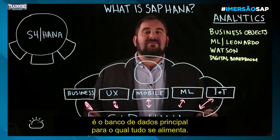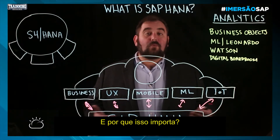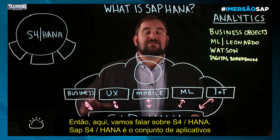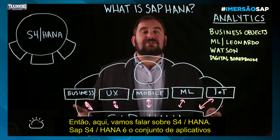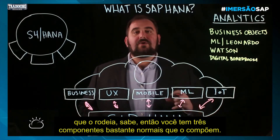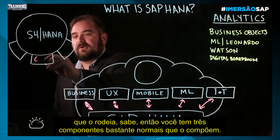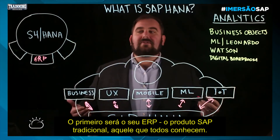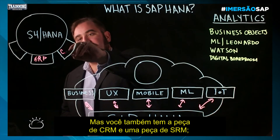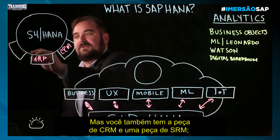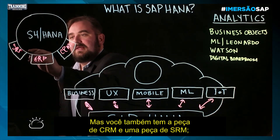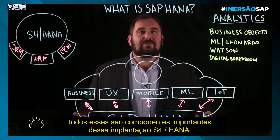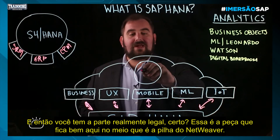HANA is the core of your digital enterprise — it is the core database that everything feeds into. Now let's talk about S/4HANA. S/4HANA is the application suite that goes around it. You've got three fairly normal components: the first is your ERP, the traditional SAP product that everybody knows about. You've also got the CRM piece and an SRM piece. These are all important components of that S/4HANA deployment.